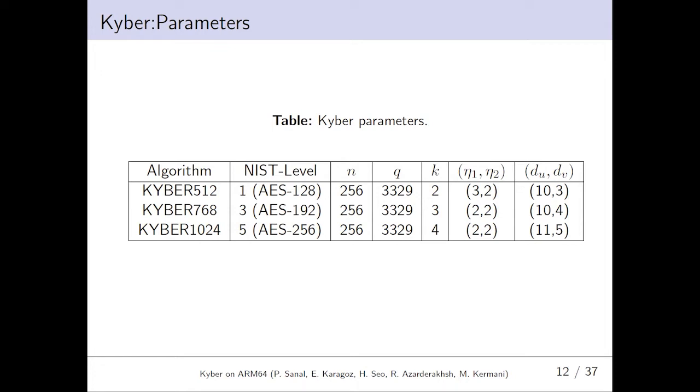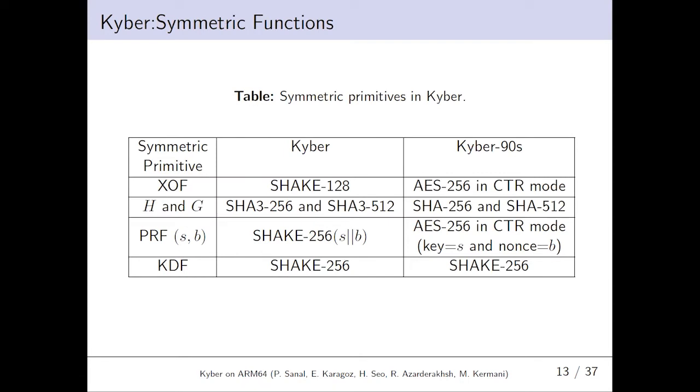Parameters. The parameters n equals 256 and q equals 3329 are fixed through Kyber. The parameter k is the dimension of the matrix polynomials in Rq. The parameter pair eta1 and eta2 is used in CBD eta function for sampling. The parameter pair du and dv is used in compress and decompress functions. Symmetric functions. Kyber uses symmetric primitives for extendable output function XOF, two hash functions h and g, pseudorandom function PRF, and key derivation function KDF. The symmetric primitives are specified in this table. At this point, Kyber has an alternate version Kyber-90s which uses SHA-2 hash functions and AES while Kyber uses SHA-3 hash functions.